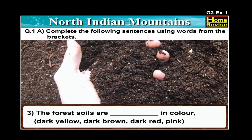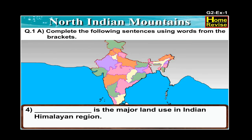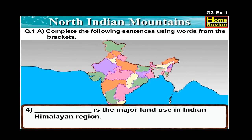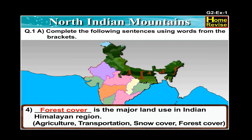Number three: The forest soils are dash in color. Options are dark yellow, dark brown, dark red, pink. The correct option is dark brown. The forest soils are dark brown in color. Number four: Dash is the major land use in Indian Himalayan region. Options are agriculture, transportation, snow cover, forest cover. The correct option is forest cover. Forest cover is the major land use in Indian Himalayan region.